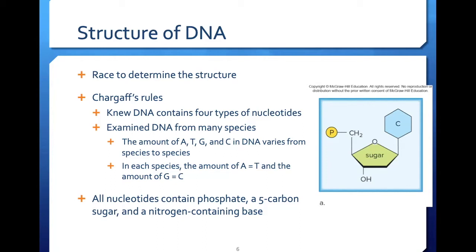The building block of DNA is the nucleotide, which is the monomer of the nucleic acid polymer. Every nucleotide contains a phosphate group, a 5-carbon sugar — in the case of DNA, this is deoxyribose — and a nitrogen-containing base. There are four variations in that base in DNA: adenine, thymine, guanine, and cytosine.